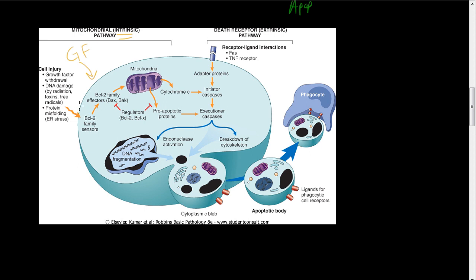There is a class of molecules called the BCL2 family. These BCL2 molecules act as sensors — if something happens and these sensors are triggered, they're going to affect the effectors BAX and BAK. What they'll do is burrow little holes inside the mitochondria. You can see these little holes in the mitochondria. Cytochrome C and pro-apoptotic proteins are then going to leak out.